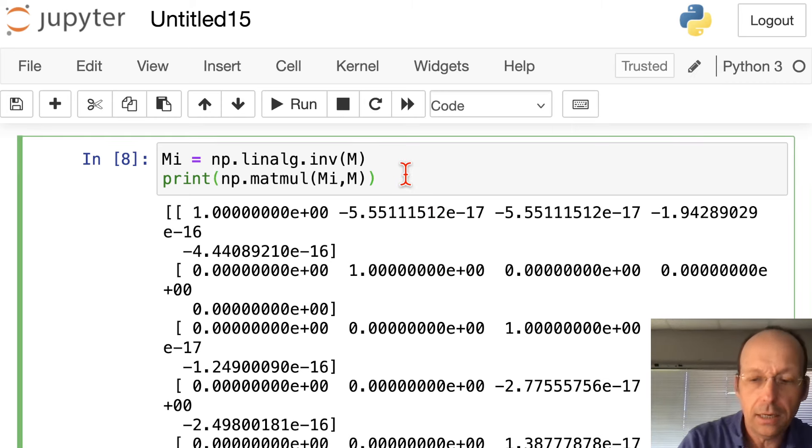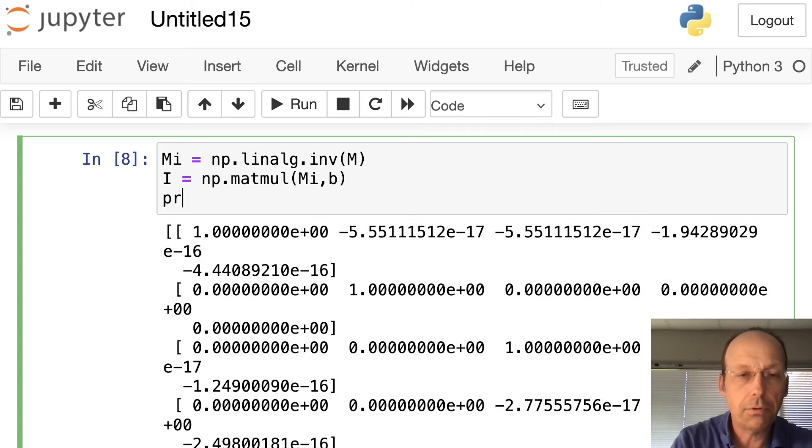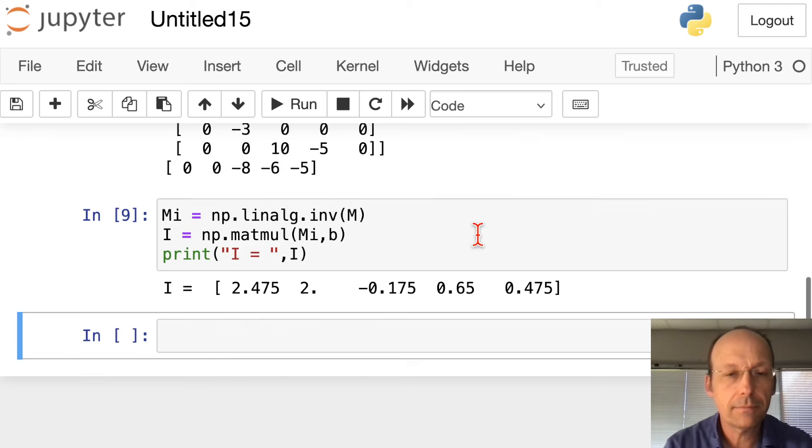Well, we're pretty much done. If I have the inverse, and that is the inverse, now I can just say I is equal to NP dot matmul, MI, and B. I'm going to operate those two together, and that should be my result, and I can print that. Print. Let's even put I equals, just to be official, I. And there we go. So there's my I1, I2, I3, I1, 2, 3, 4, 5. There's my five currents.